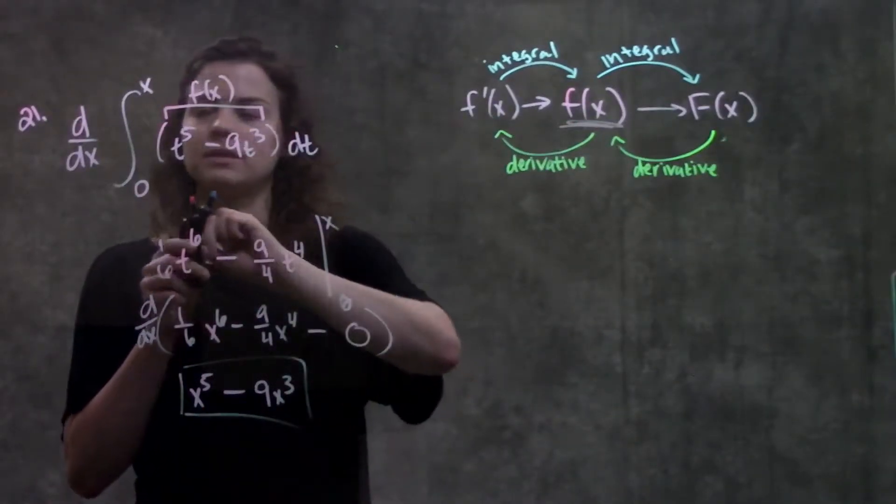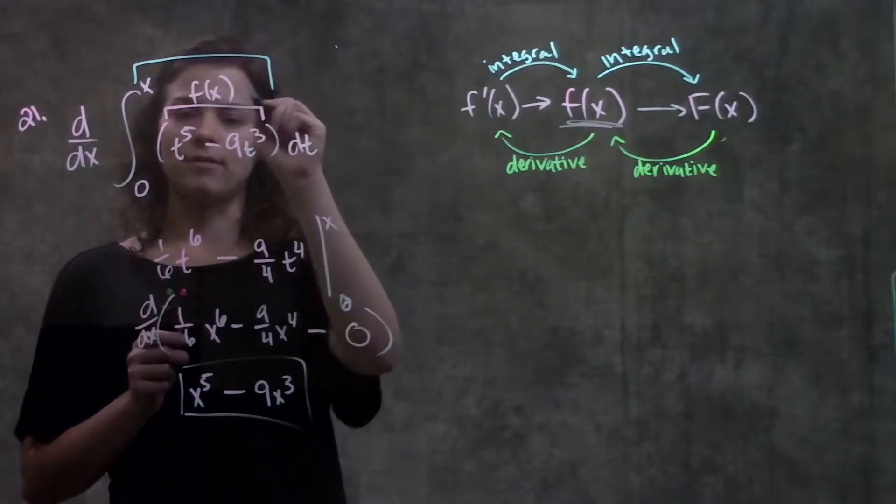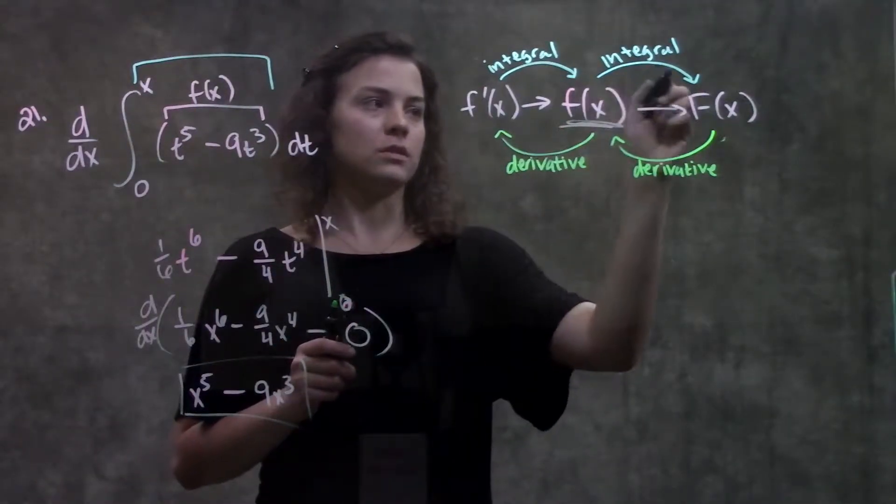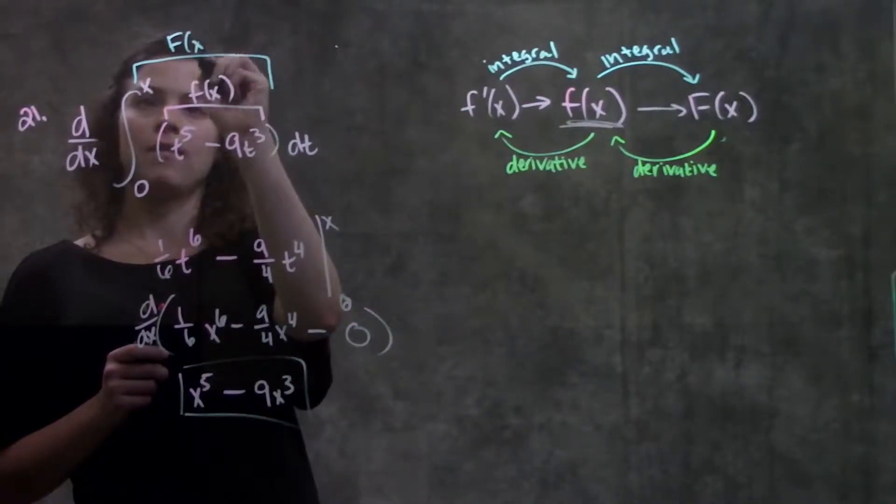The next thing tells us to take the integral of f of x. When I take the integral of f of x, I end up with big F of x.